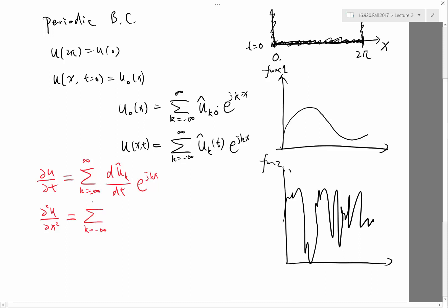So when we look at the Fourier series of that, this time would the u hat of k be any different? No, because they are functions of only time. They are not functions of space. But how would the exponential of j kx change?